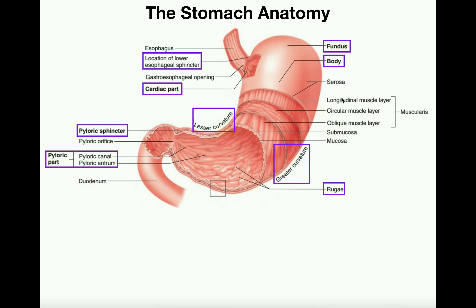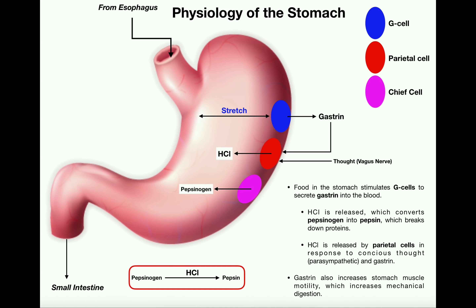These muscular layers allow mechanical digestion. But when we start talking about chemical digestion, we're getting into the physiology of the stomach. The food as a bolus comes from the esophagus, enters through the cardiac sphincter, and ends up in the stomach. To understand the chemical digestion, we have to talk about three cell types in the wall of the stomach: G cells, parietal cells, and chief cells.